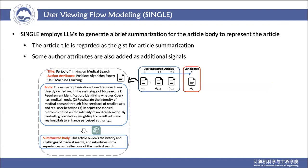Firstly, we regard the article title as a gist and employ the large language model to summarize the article body. In addition, author attributes are also regarded as additional signals to help the article body summarization process.